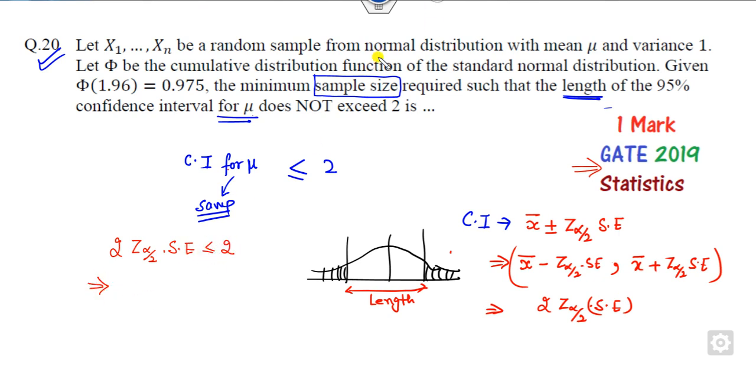Now you can substitute the values. This 2 will be cancelled out. Z alpha by 2, that is 1.96, is given to you at the 5 percentage level. The standard error is sigma by root n. Since it is a standard normal distribution, the value of sigma is 1, so root n is greater than 1.96.